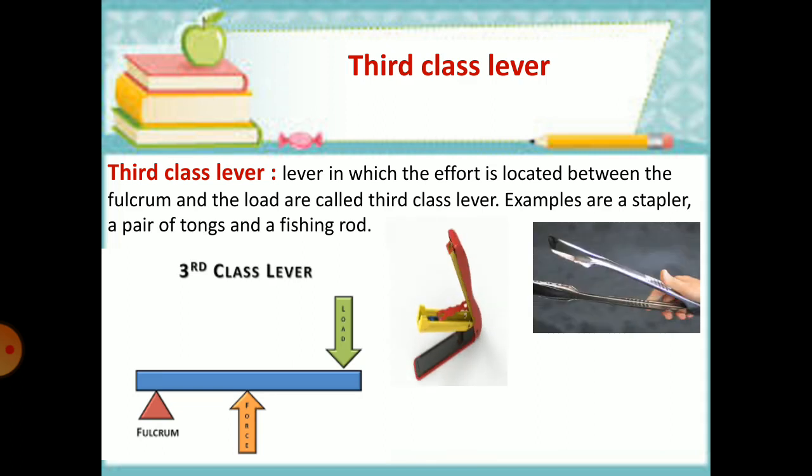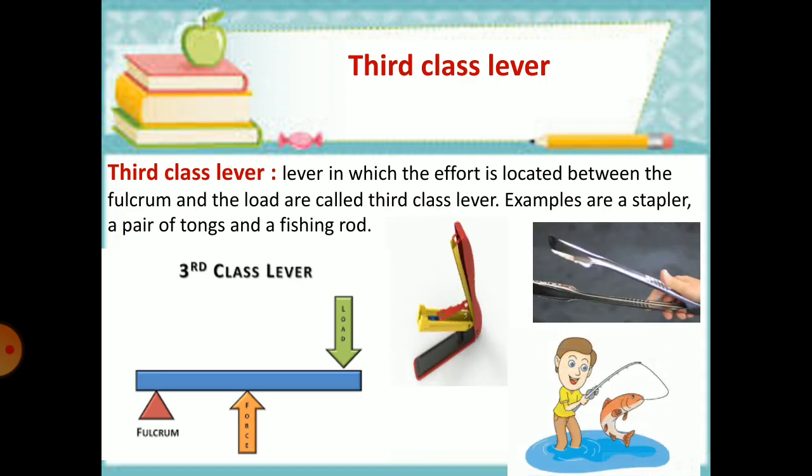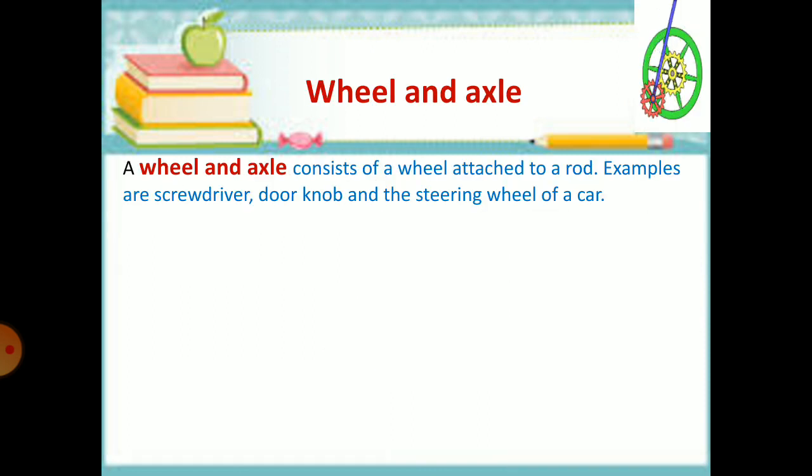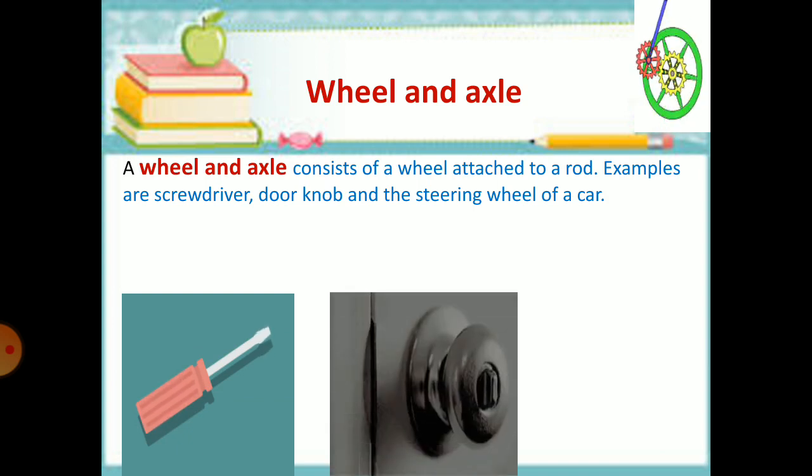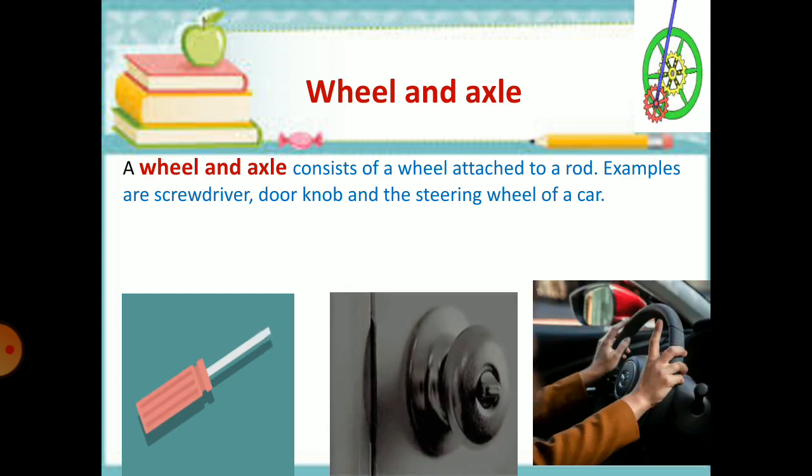Wheel and axle. A wheel and axle consists of a wheel attached to a rod. Examples are screwdriver, doorknob, and the steering wheel of a car.